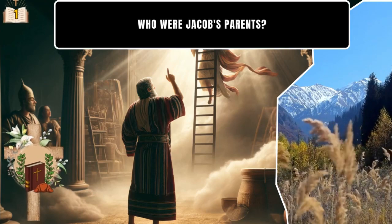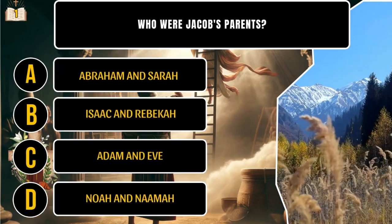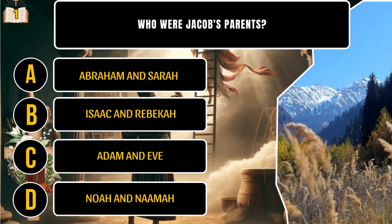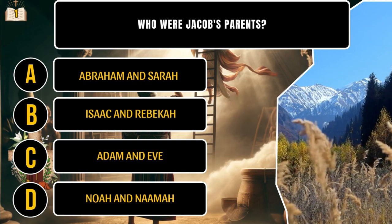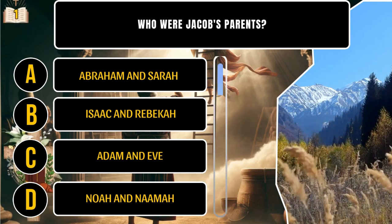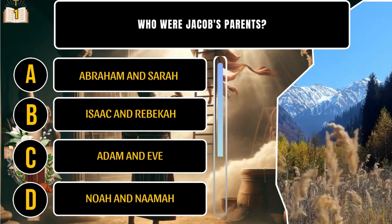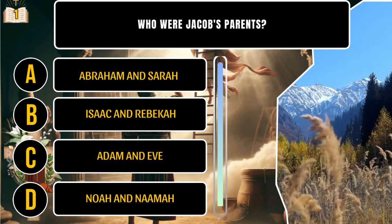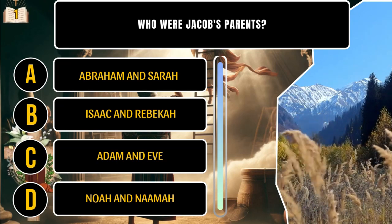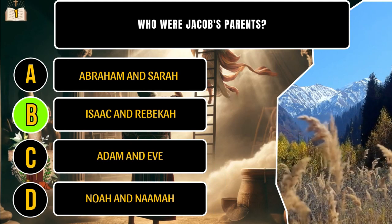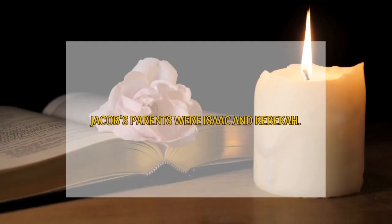Who were Jacob's parents? A. Abraham and Sarah. B. Isaac and Rebekah. C. Adam and Eve. D. Noah and Naima. B. Jacob's parents were Isaac and Rebekah.